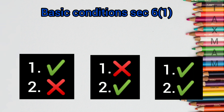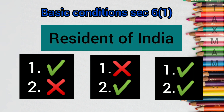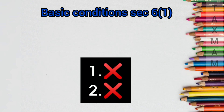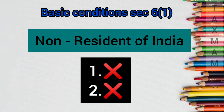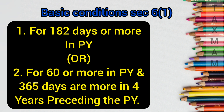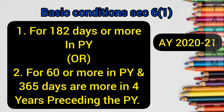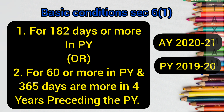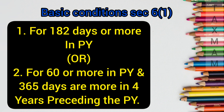Section 6(1) talks about the basic conditions. If any one condition or both the conditions are satisfied by a person, then that person will be called a resident of India. If both conditions are not satisfied, the person will be declared a non-resident. First condition: the person must be in India for 182 days or more in the relevant previous year. Second condition: the person must be in India for 60 days or more in the relevant previous year and 365 days or more in the immediately preceding four previous years.